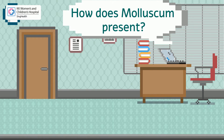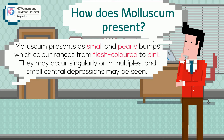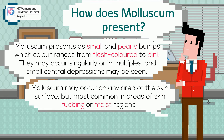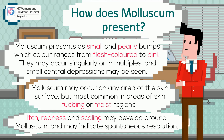How does molluscum present? Molluscum presents as small and pearly bumps, which color ranges from flesh color to pink. They may occur singularly or in multiples, and small central depressions may be seen. Molluscum may occur on any area of the skin surface, but most common in areas of skin rubbing or moist regions. Itch, redness, and scaling may develop around molluscum, and may indicate spontaneous resolution.